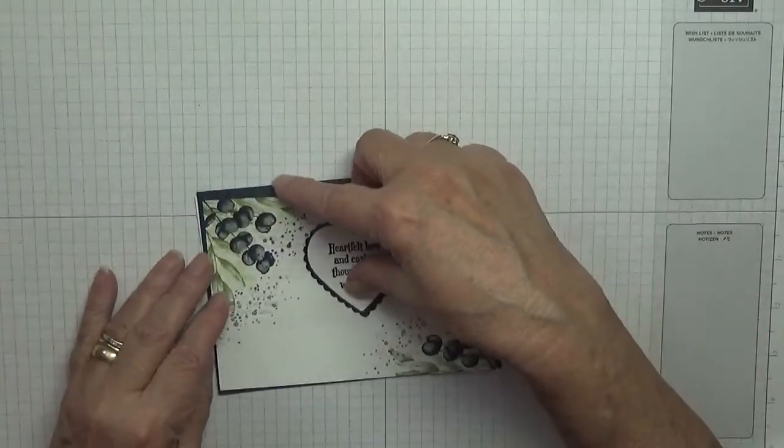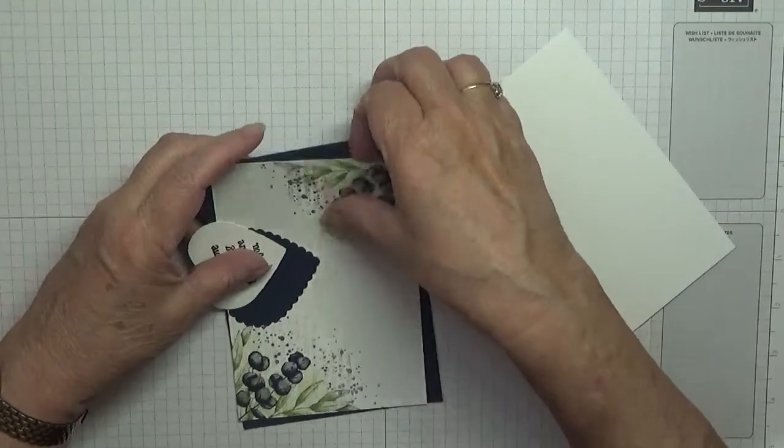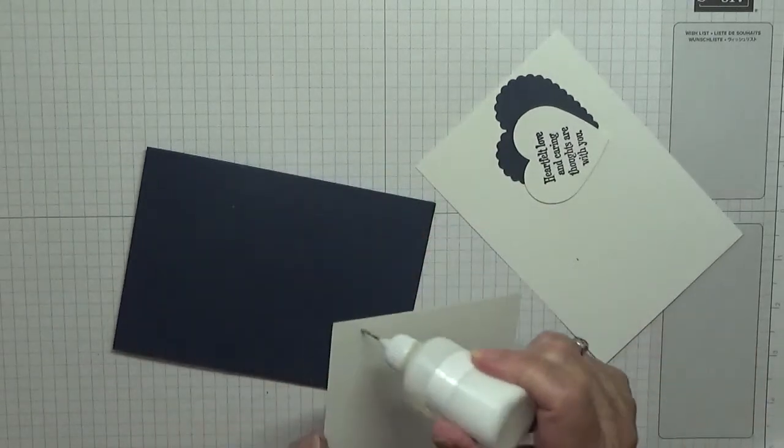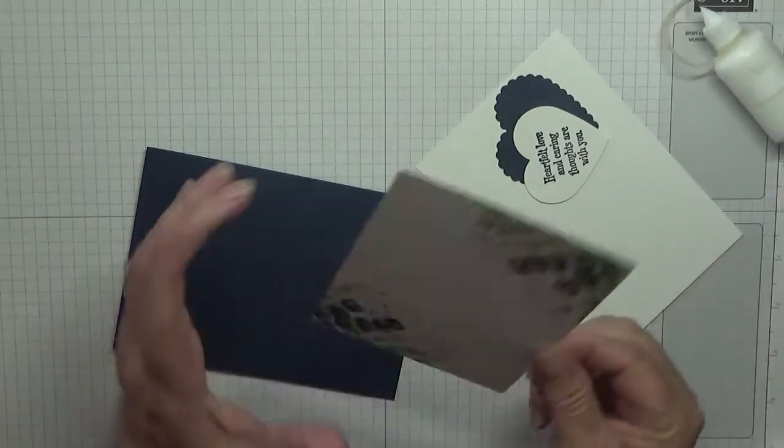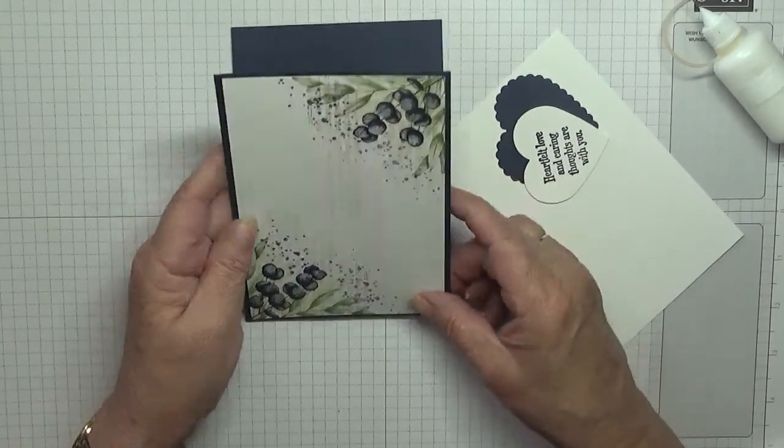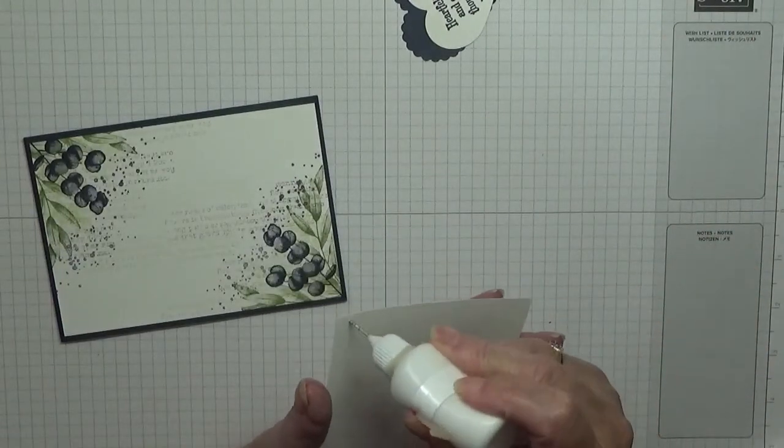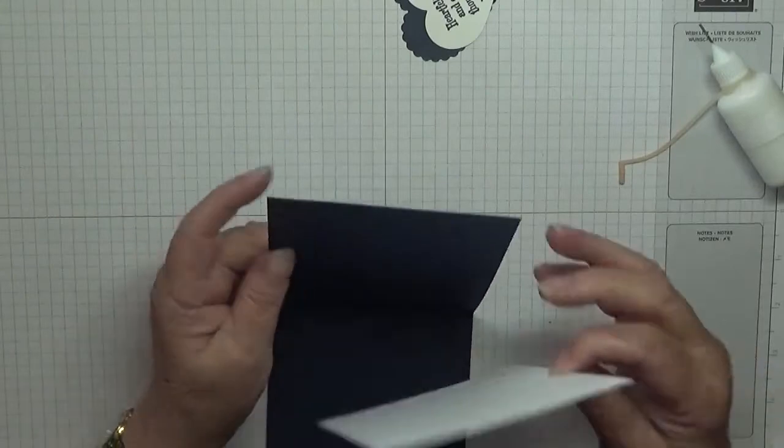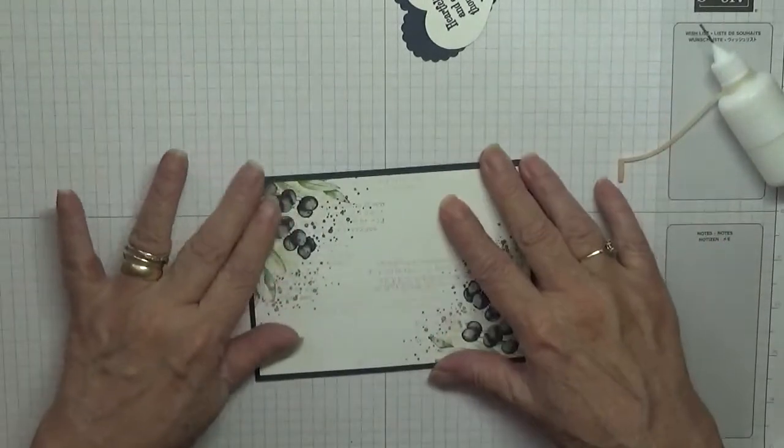And then that will go on there like that. So let's add our paper to our card base, making sure I put it on straight. Put the inside inside. I've left that plain, could have done some leaves or some inside, but never mind. Right.